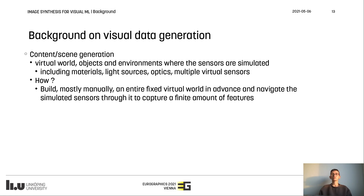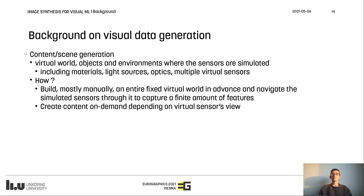There are two basic approaches for content generation. The first is to build an entire fixed virtual scene where the simulated sensors will be navigated. This approach relies mostly on manual effort and artistic work, and results in limited data variation, since the possible generated images build on a finite set of features. The second approach generates scenes on-demand, creating only what is currently viewed by the simulated sensors. Such on-demand content generation can be achieved using procedural methods, and even though it can be more time-consuming per frame, it results in more content-rich data variations.